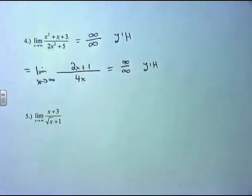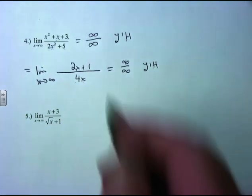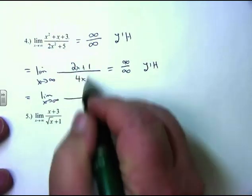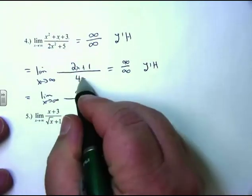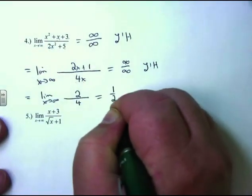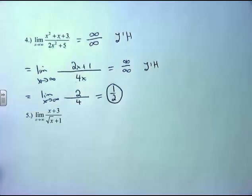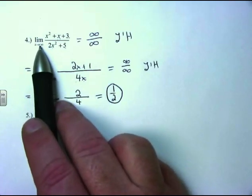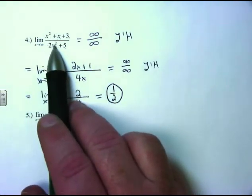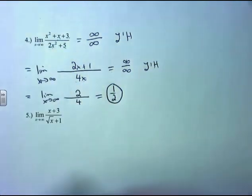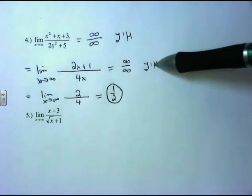You can apply L'Hôpital's rule as many times as needed until you get a numerical value. Applying it again: derivative of 2x + 1 is 2; derivative of 4x is 4. There's nothing left to plug in — 2/4 = 1/2. This confirms the earlier rule: when the degree of the top equals the degree of the bottom, the limit is the ratio of leading coefficients, which here is 1/2.